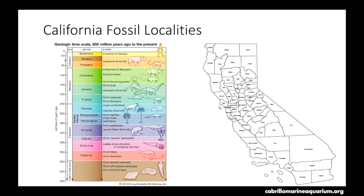Now let's get into some California fossil localities. We have a California map on the right showing all of the counties. I'm going to highlight a few of these counties and highlight on this geologic time scale the periods in which you can find fossils from within those counties. The time scale will then be shrunk and moved onto the map so I can list the different types of fossils within the counties and name the different localities — whether that be a specific mountain or a specific rock formation.